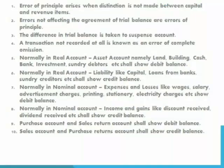Error of Principle arises when distinction is not made between capital and revenue items. When the capital item and revenue item distinction is not made and one journal entry is passed incorrectly, that is called Error of Principle. Error of Principle will not affect the agreement of the trial balance — the trial balance is tally, but the error is still there.